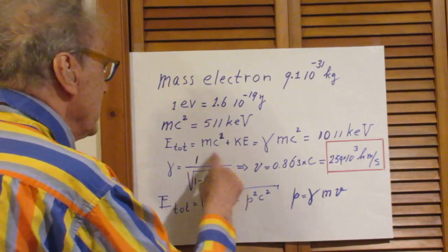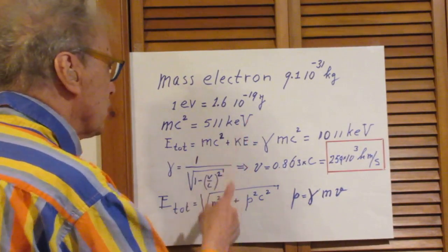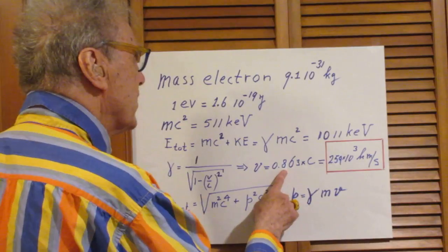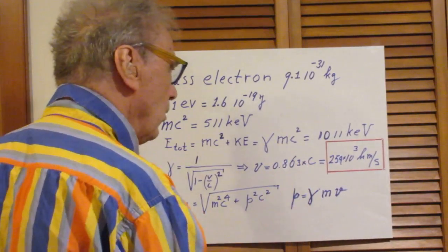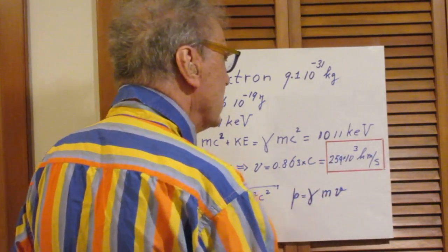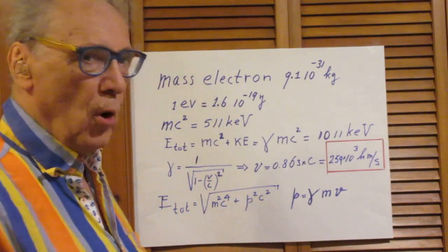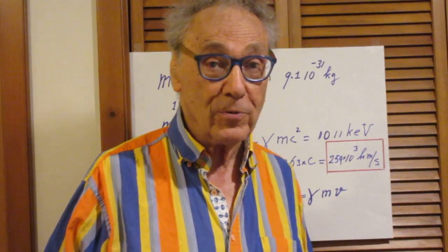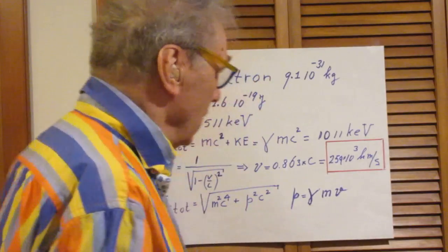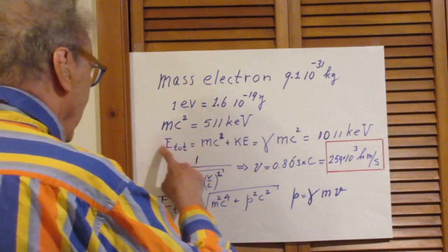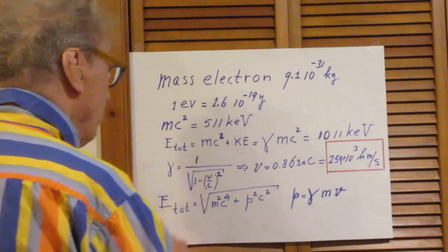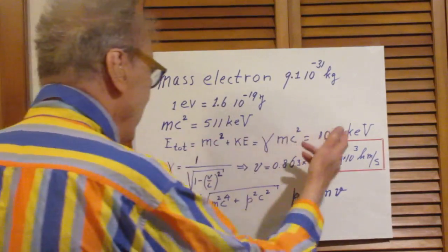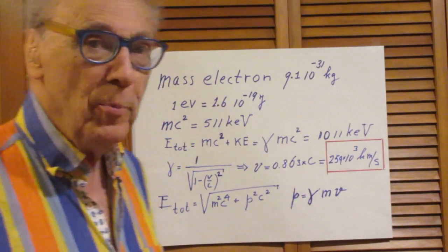Gamma is 1.98, and gamma equals 1 over the square root of 1 minus v over c squared, so the problem is solved. If you know gamma is 1.98, it's trivial to calculate v: it's 0.83 times the speed of light, which translates to 259,000 kilometers per second — less than the speed of light at 300,000 kilometers per second. If you work in keV, this problem can be solved in two minutes.